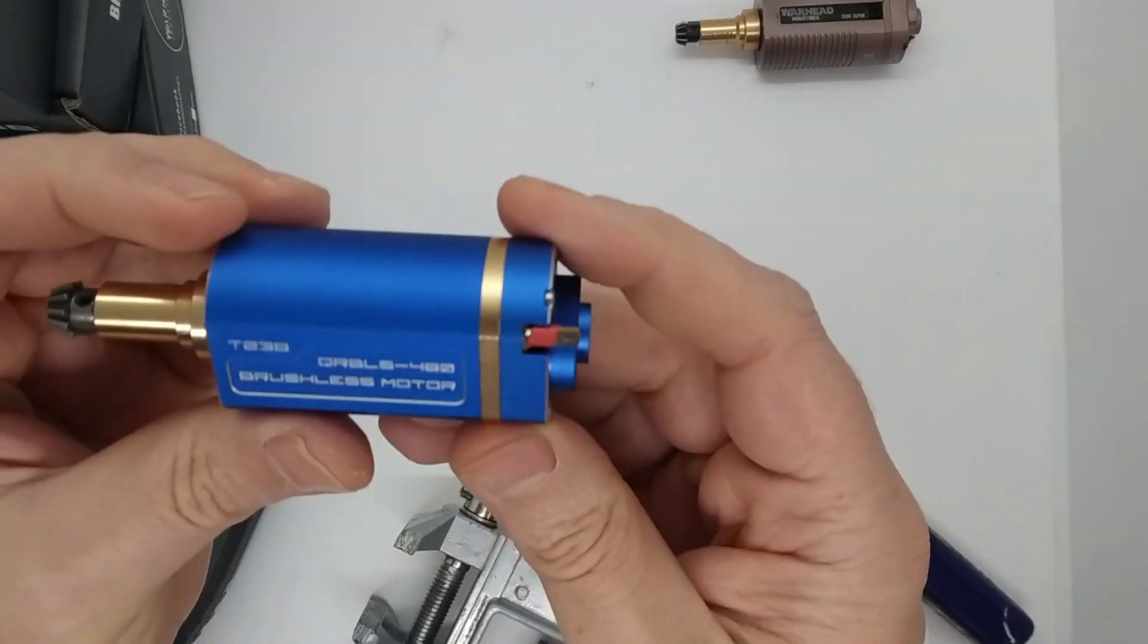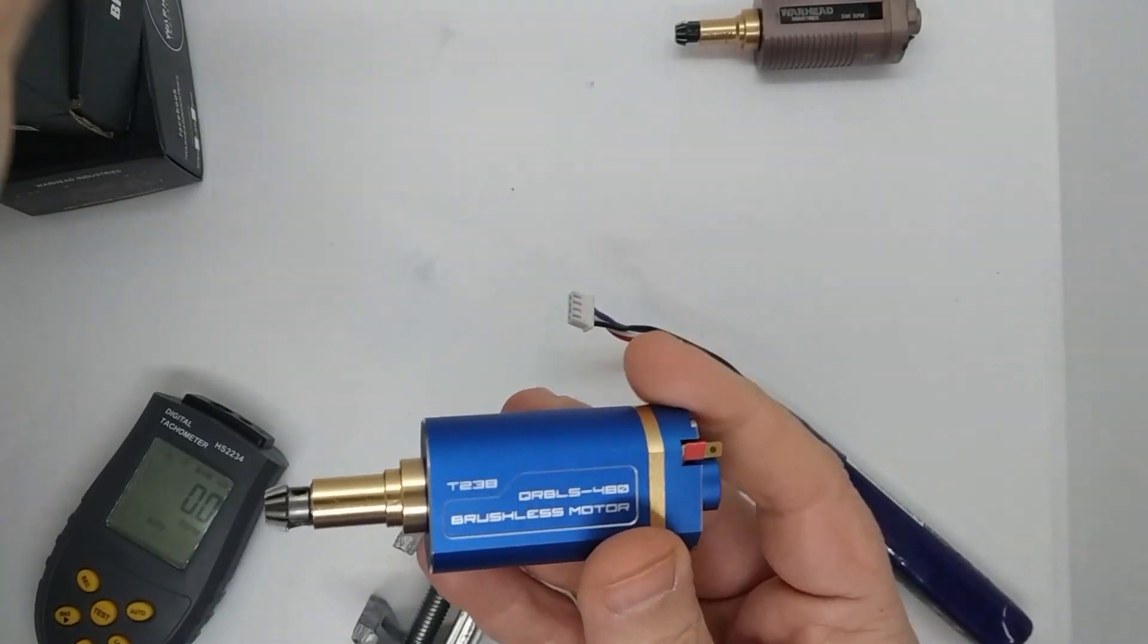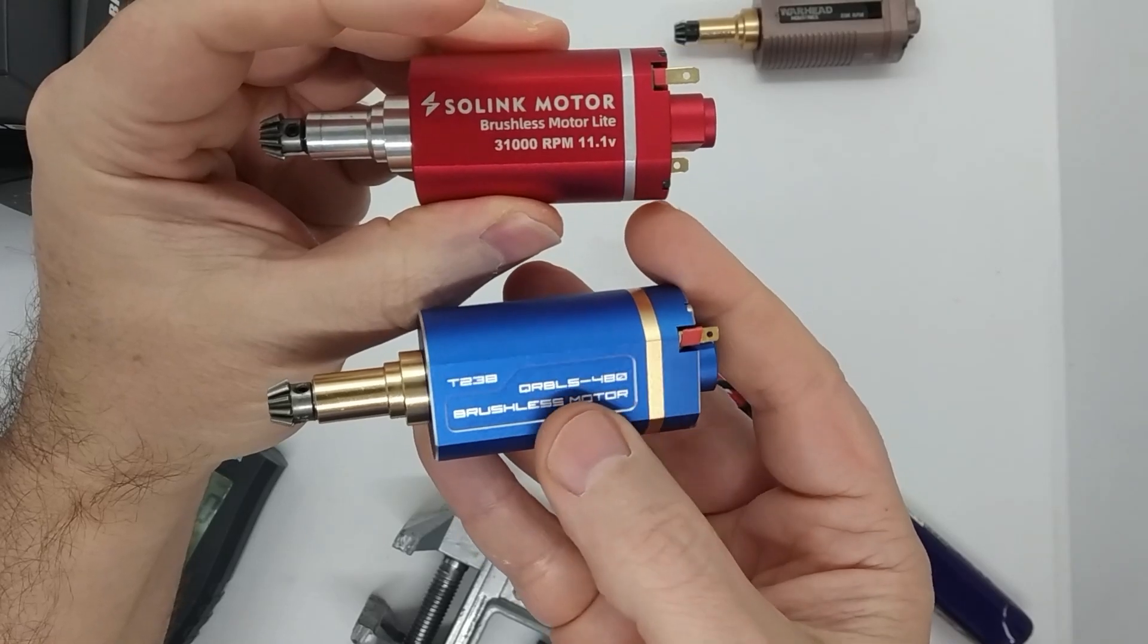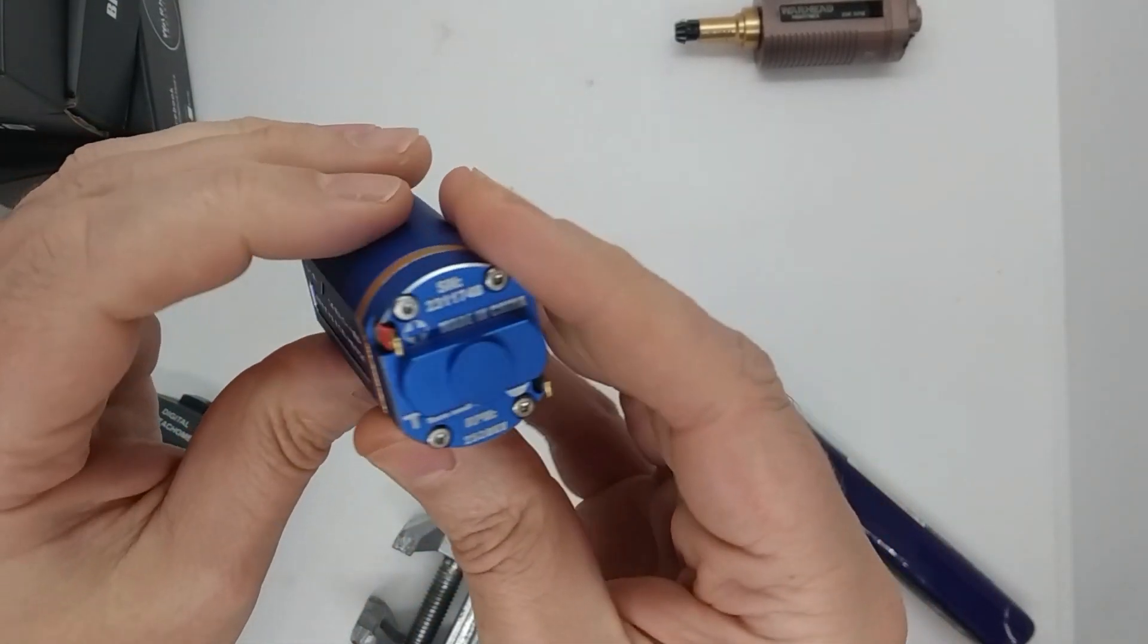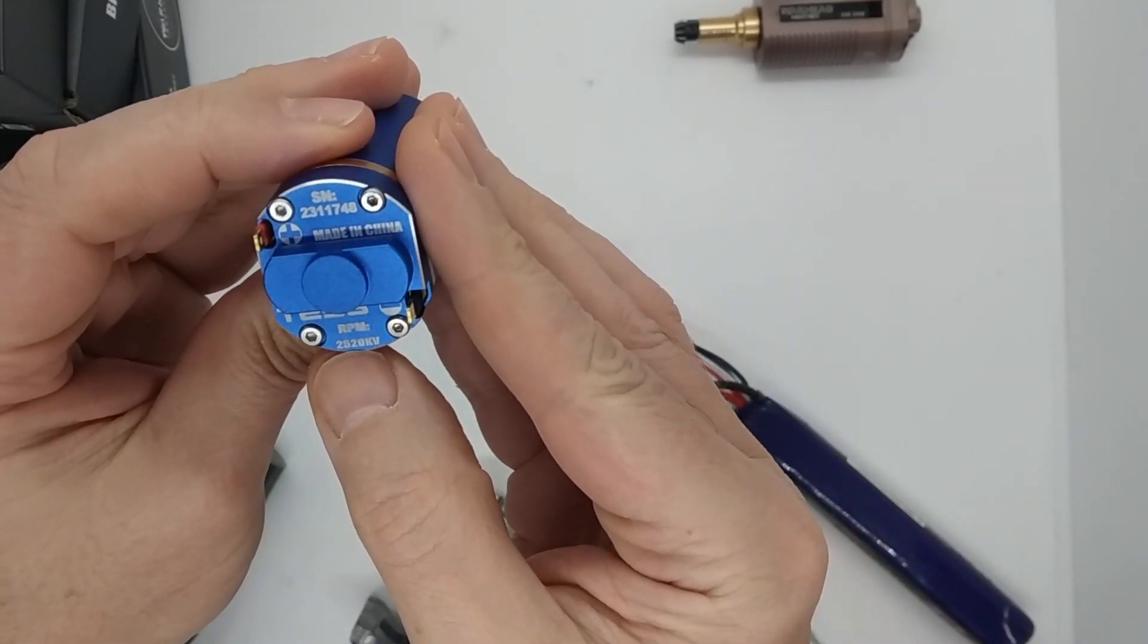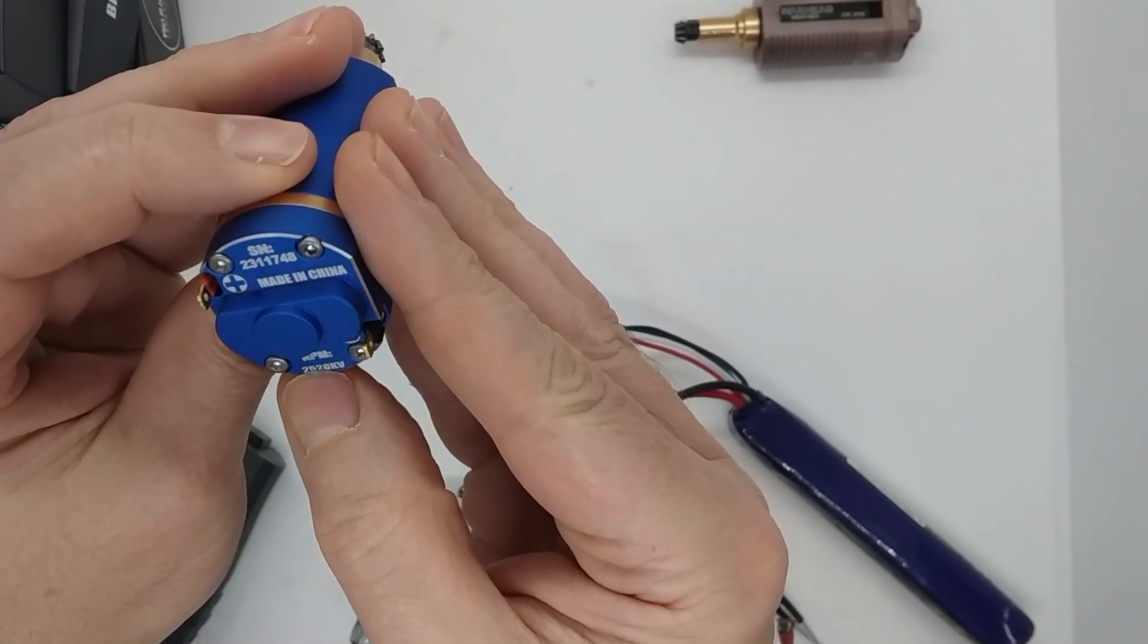Here we've got the T238 and this is a similar motor to this one, so it's their budget line. And this says on here it says 2250 KV.